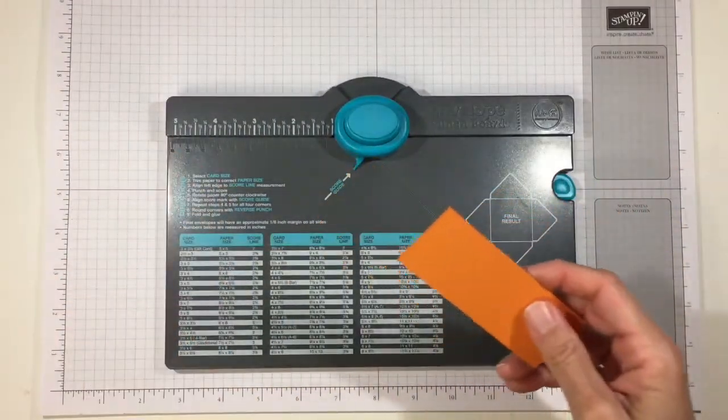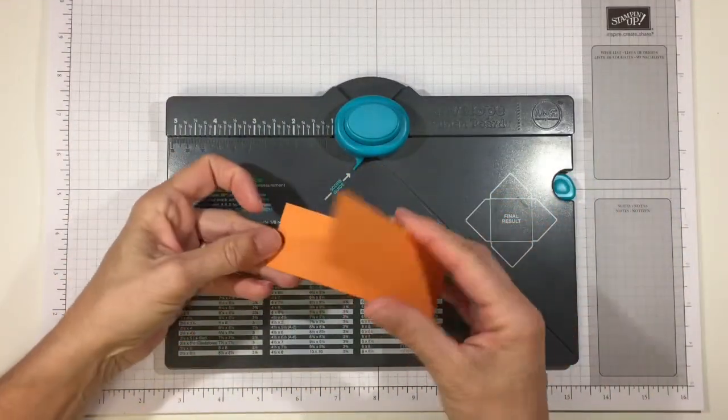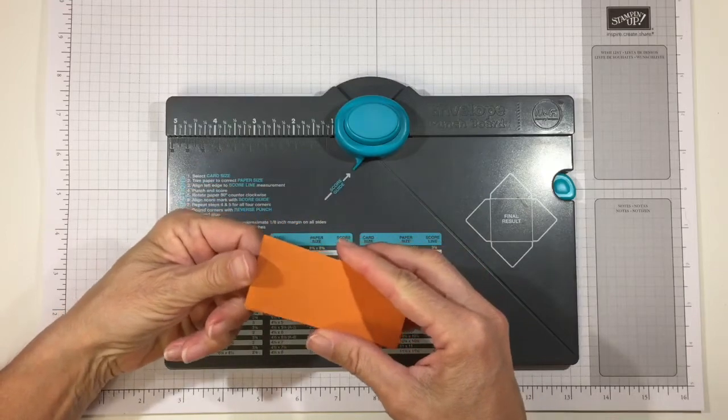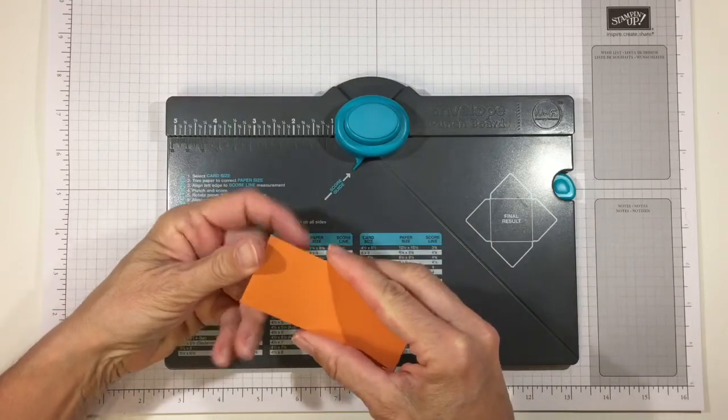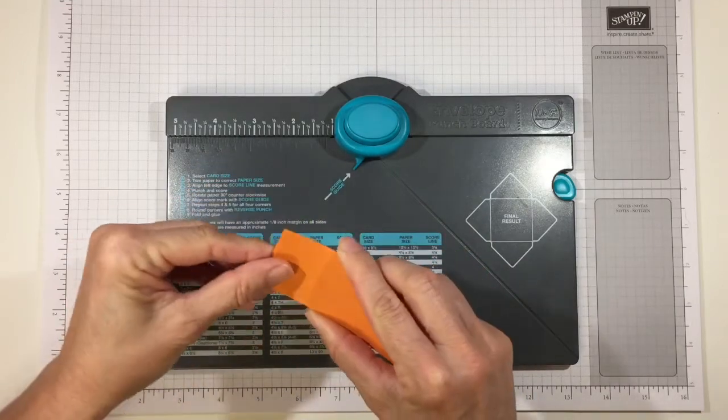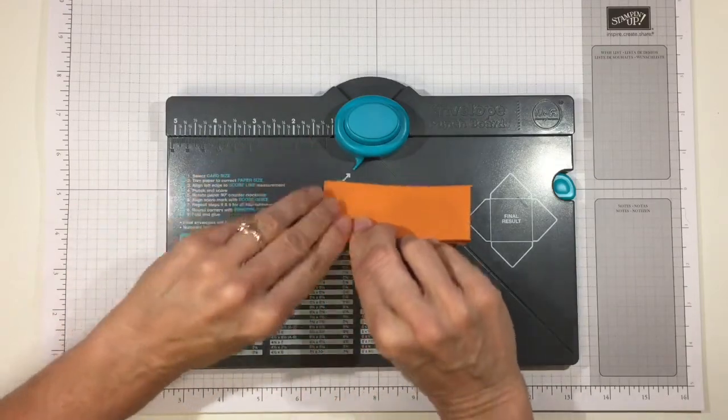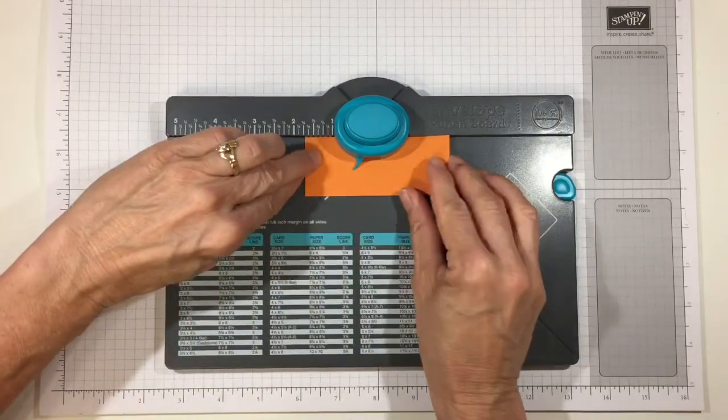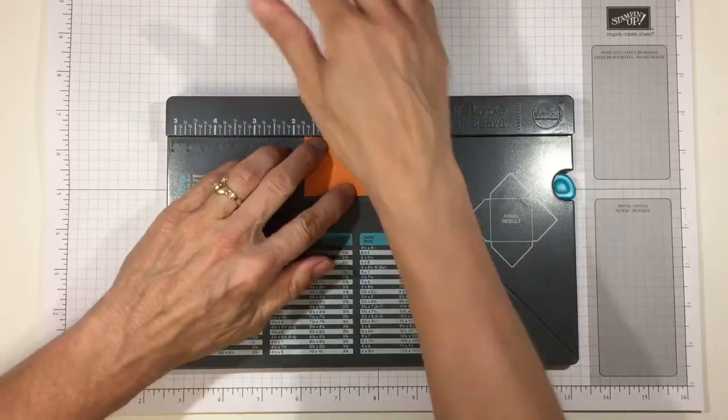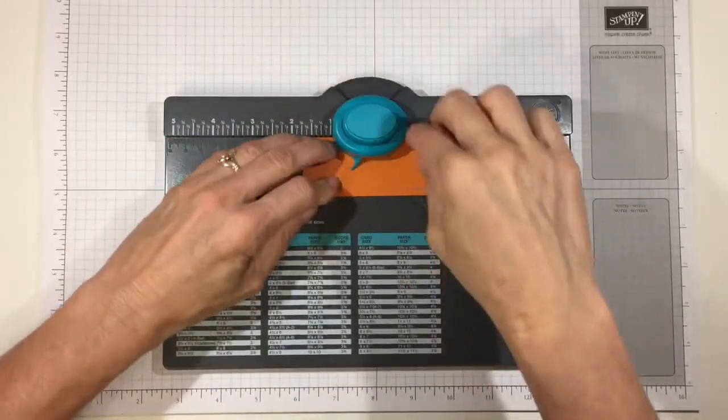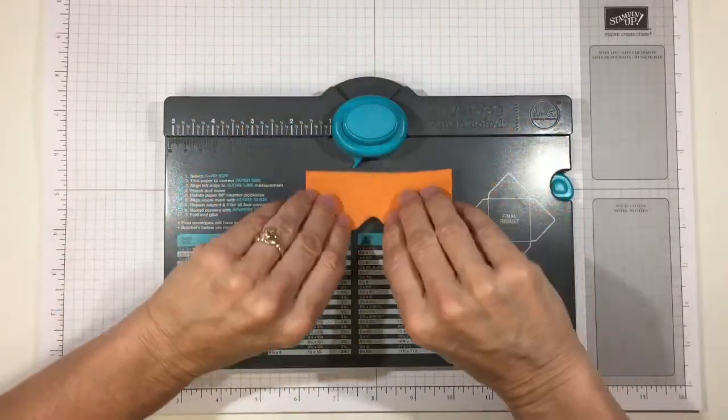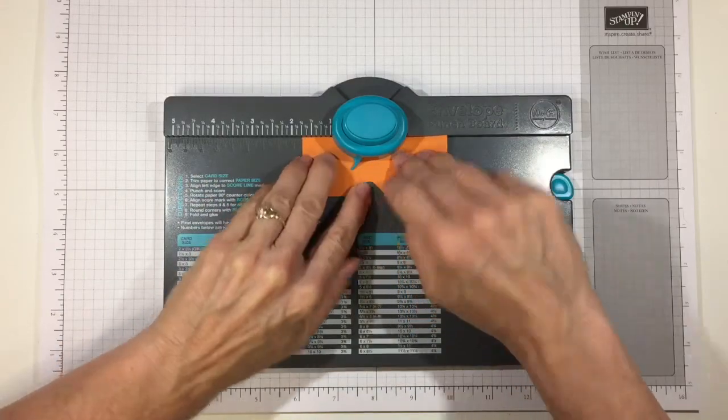Now I punch both sides at the same time, but you can certainly do just one end at a time. What I did is I just lined up both the ends together and I held them together, and I lined that up at one and three quarters of an inch. So both the ends were lined up at one and three quarters of an inch and punch. Flip him over and do the same thing, one and three quarters of an inch and punch.